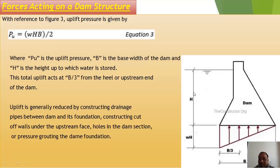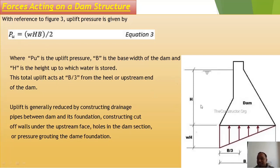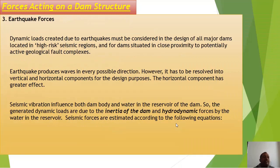Uplift pressure Pu equals w × H × B divided by 2, where w is the specific weight of water, H is the height of dam, and B is the width of dam. This pressure acts at a distance of B/3 from the heel of the dam, as seen in the structural figure. Next are earthquake forces, which act on the dam structure.